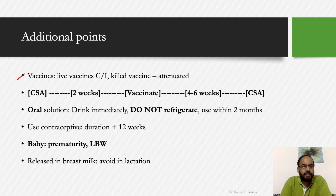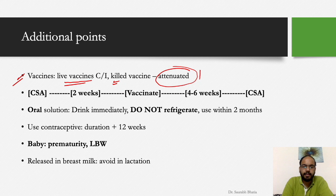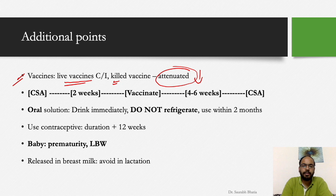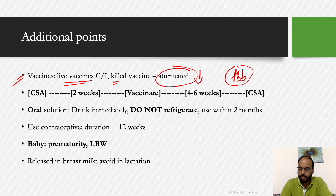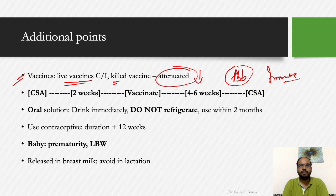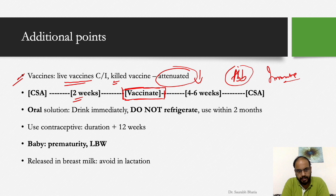Regarding vaccines: live vaccines are contraindicated with any immunosuppressive agent. Killed vaccines can be given but the response will be attenuated due to suppressed immunity. For optimal seroconversion, a working immune system is required. If a patient is on cyclosporine and needs vaccination, stop cyclosporine two weeks before vaccination. If a patient has just received vaccination and you want to start cyclosporine, wait four to six weeks after vaccination before starting.